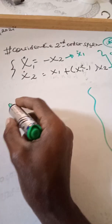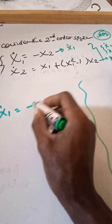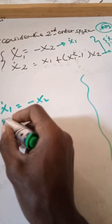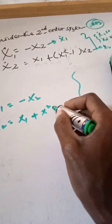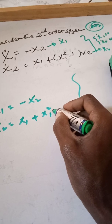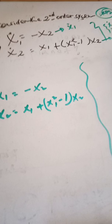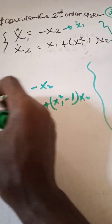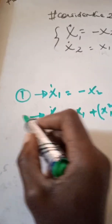x1_dot is equivalent to minus x2 — that is equation one. And x2_dot is equivalent to x1 plus (x1 squared minus 1) times x2 — that is equation two.